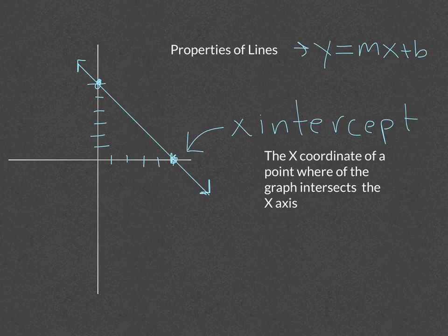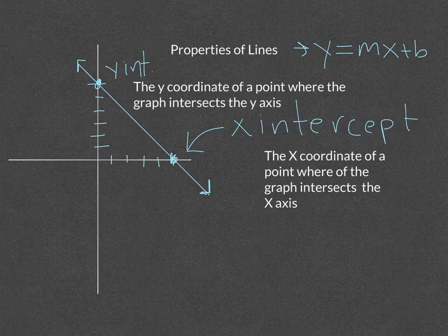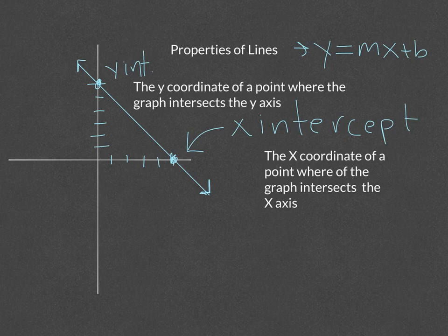The next part of the line is the y-intercept. The y-intercept is the y-coordinate of the point where the graph intersects the y-axis. So the x-intercept is where you cross the x-axis, the y-intercept is where you cross the y-axis.